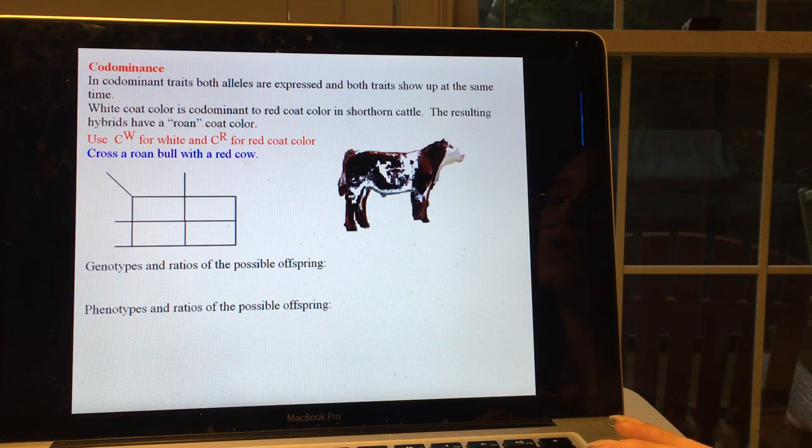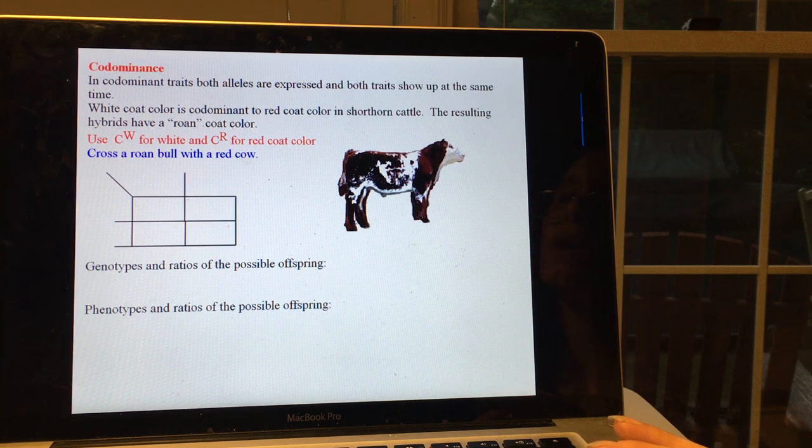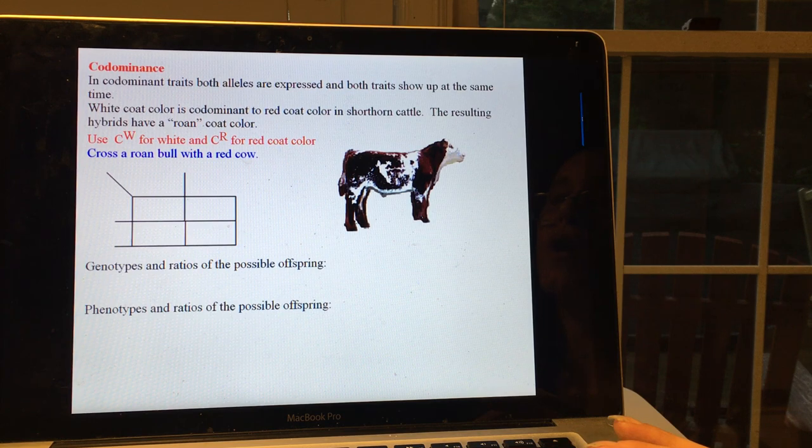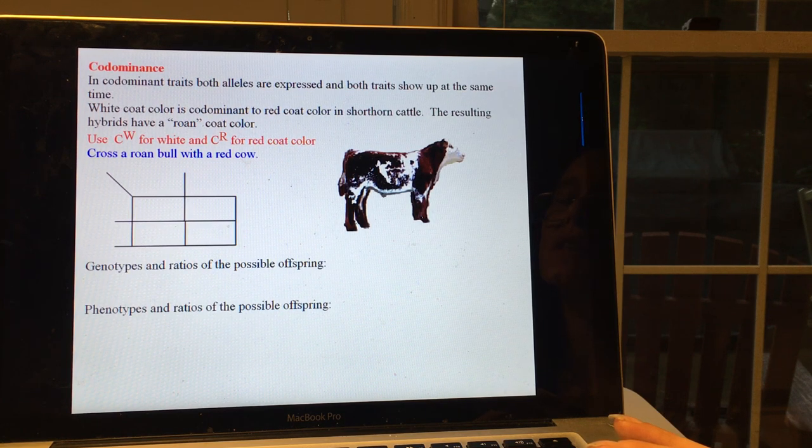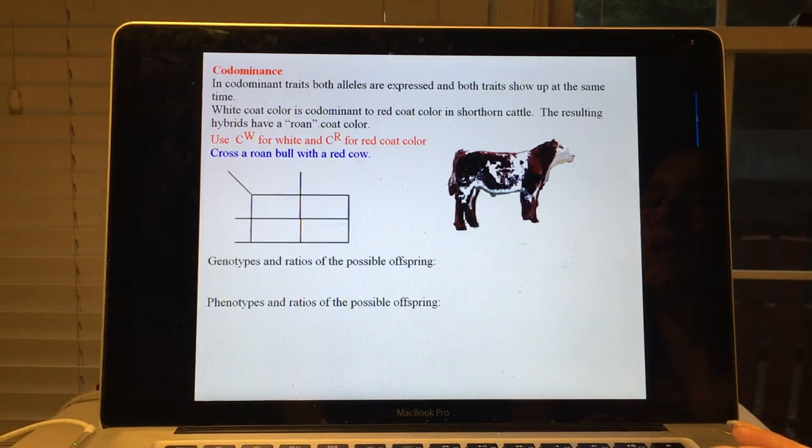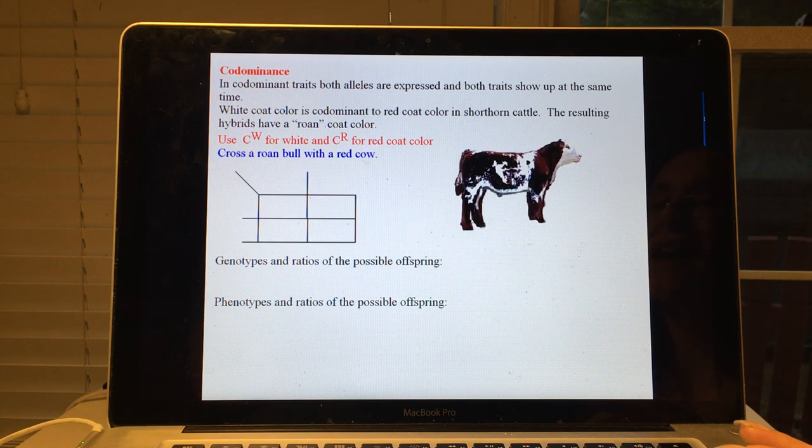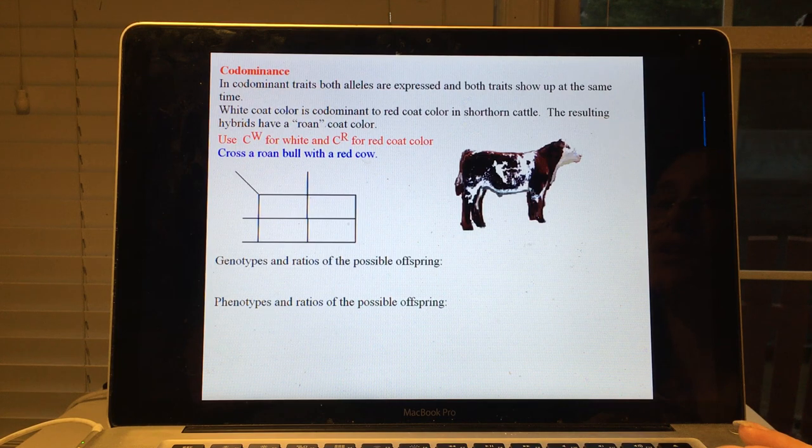Coat color in shorthorn cattle is the classic example that most books use. Hybrids or heterozygous individuals have what we call a roan coat, which means that there are some patches of this reddish brown and patches of white. So both genes are expressed and you don't really have a blend of the two like some sort of beige or tan or in-between color. You just have patches that have different colors.